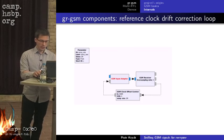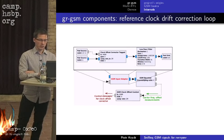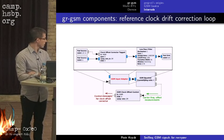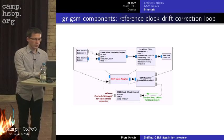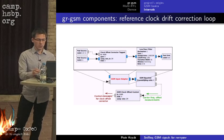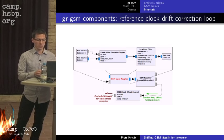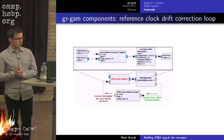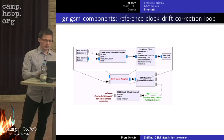The frequency correction loop has the receiver, a clock offset control block, and a convenience block grouping other blocks. The GSM receiver measures carrier frequency offset and sends it to the clock offset control block. If this block decides the clock offset frequency needs correction, it sends a control message to the clock offset corrector tag block, which contains two blocks: one for correcting carrier frequency offset, and one for correcting sample frequency offset.